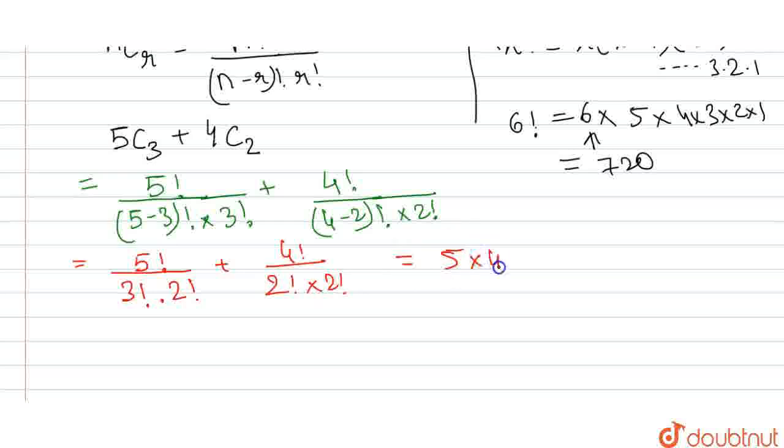And this is equal to, we can write 5 factorial as 5 into 4 into 3 into 2 into 1 divided by 3 factorial as 3 into 2 into 1 into 2 factorial 2 into 1. So from here 2 into 1 is gone, and 2 will go into 2 and 3 will be also gone. And now it will be 10. 5 times 2.